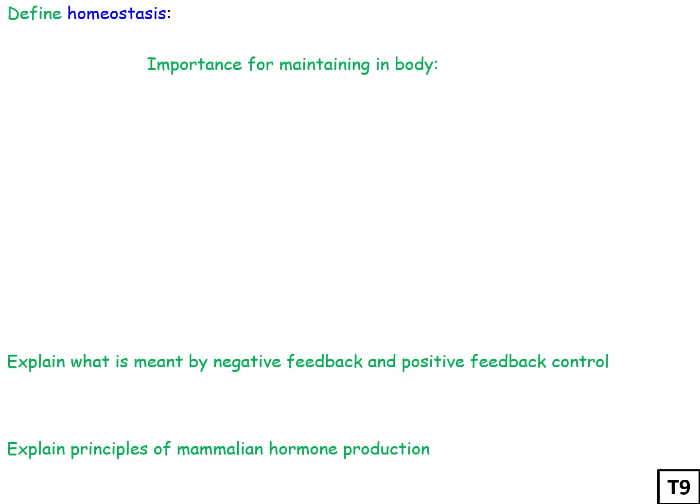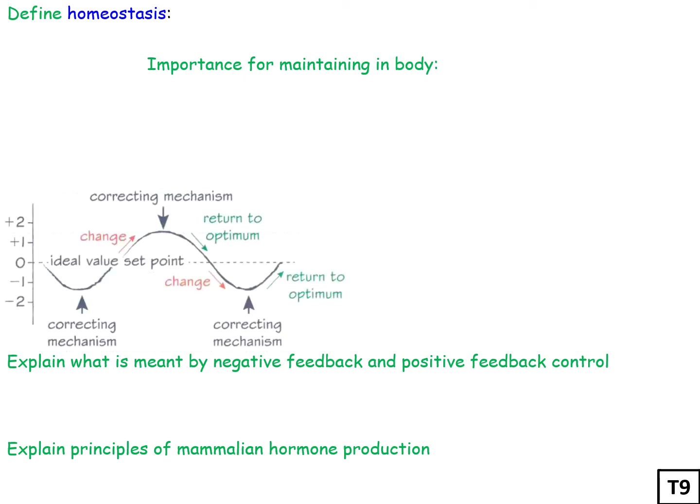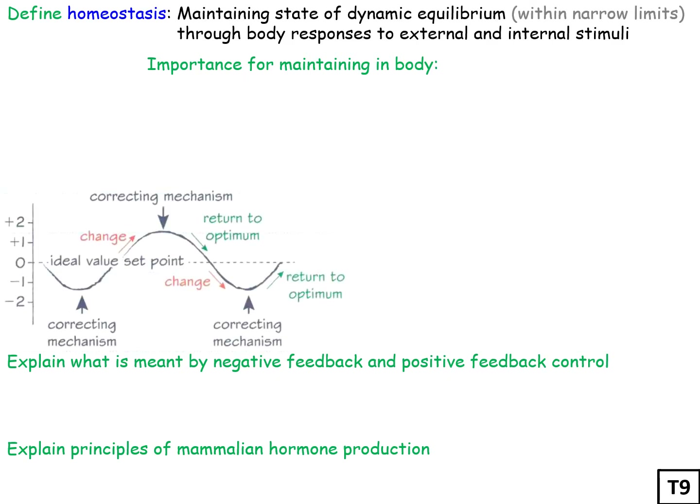So it's really important to control the concentration of water in animals, and this involves homeostasis. Homeostasis is when you maintain a state of dynamic equilibrium through body responses to external and internal stimuli. In this case it could be either having too much water or too little water in organisms, and that obviously affects the cells.